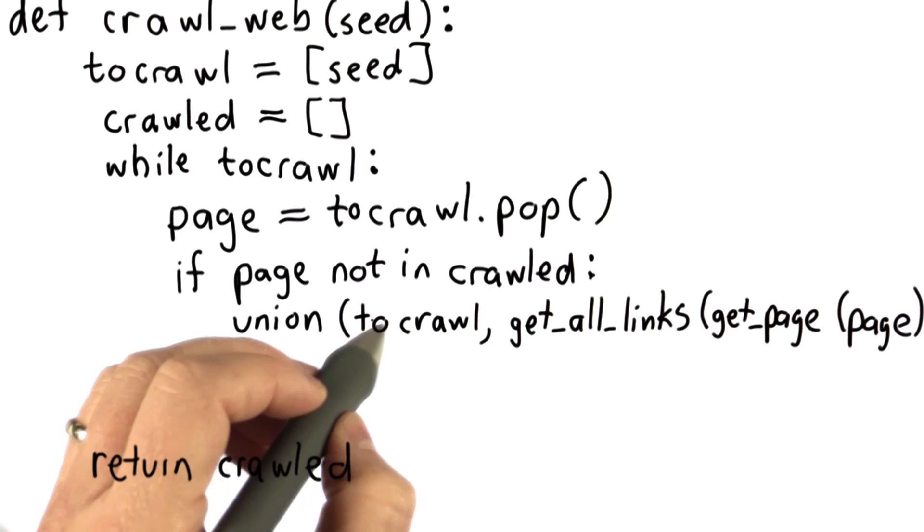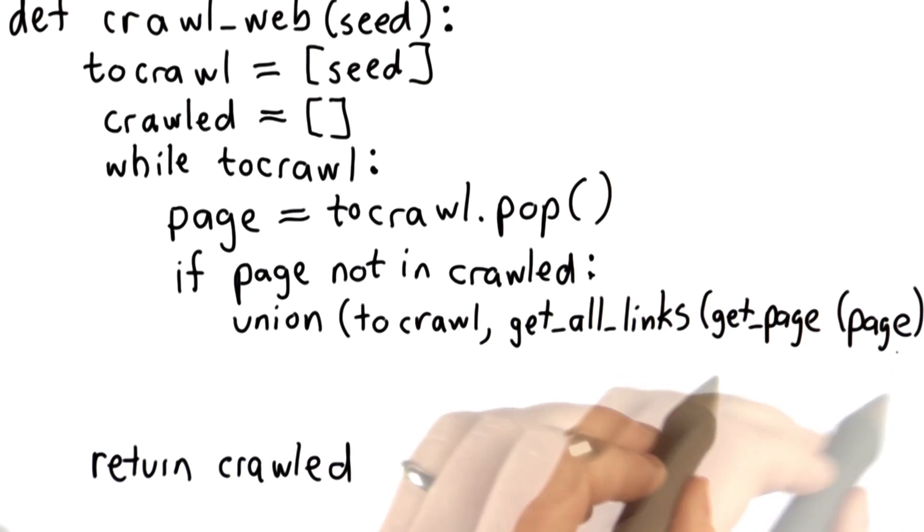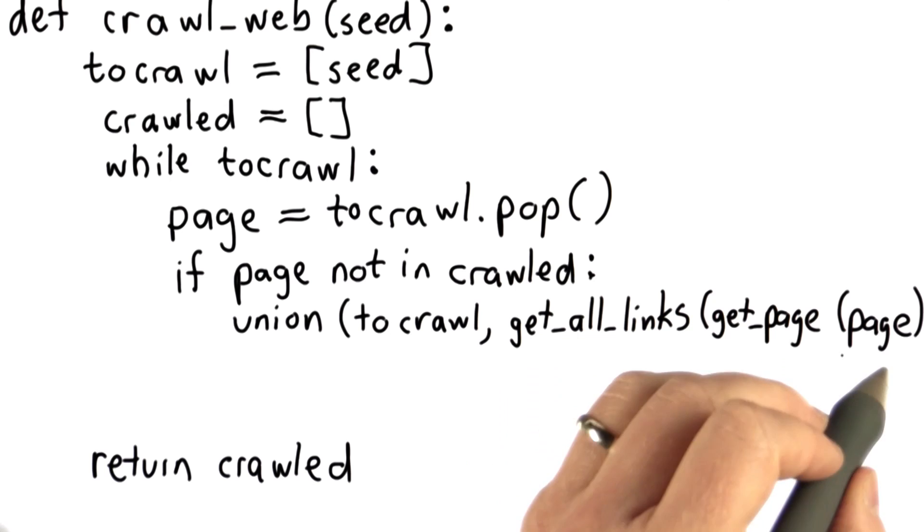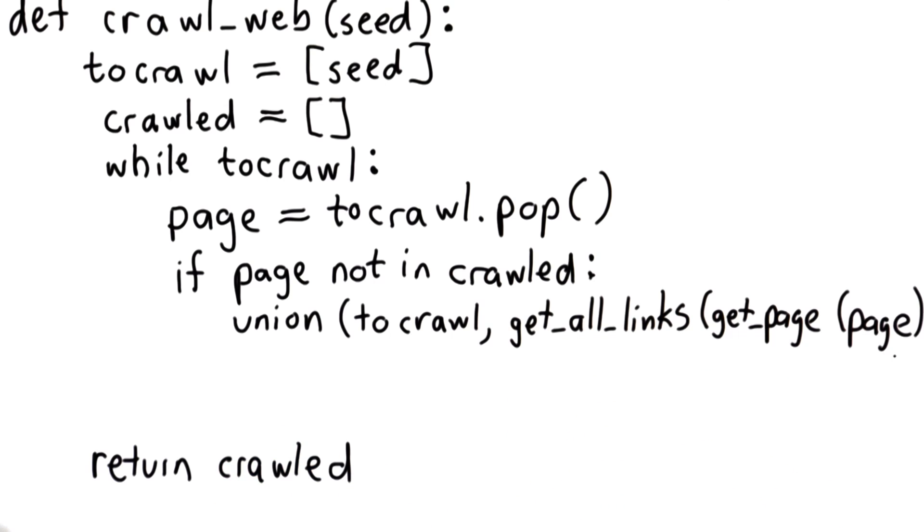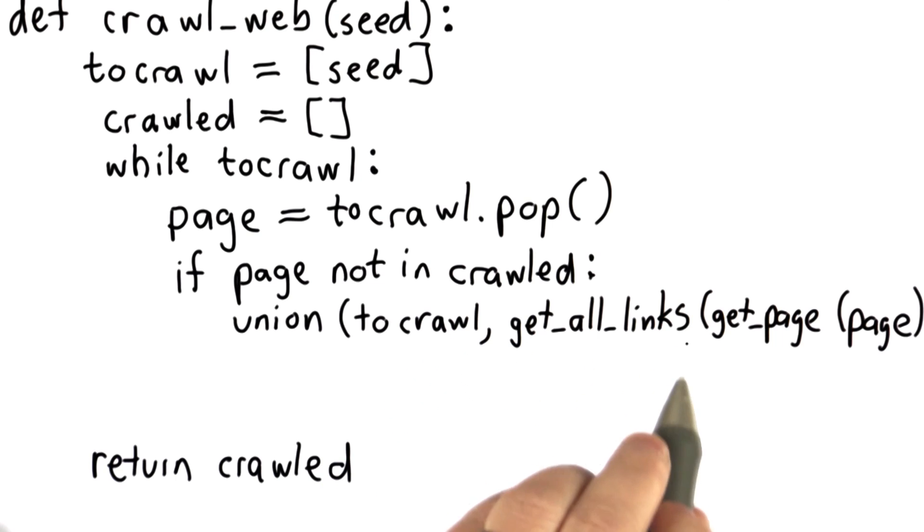So I'll do it using union. We're going to union into tocrawl the result of finding all the links on the page that we found and we need to use get_page passing in page to get the actual contents of that page. And the get_all_links procedure that we defined earlier that returns a list of all the links on that page.